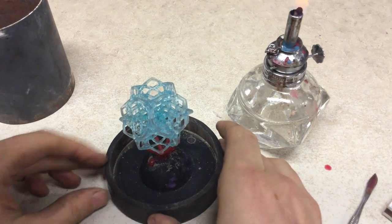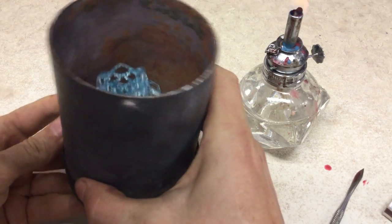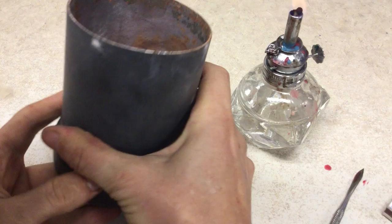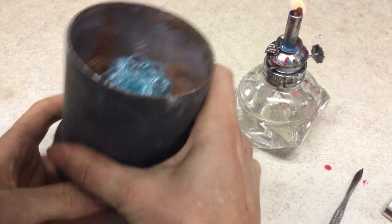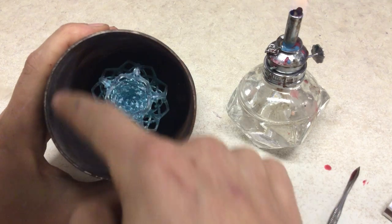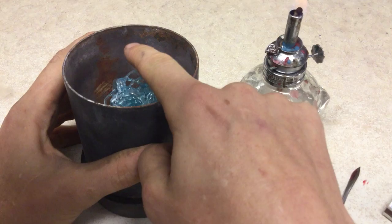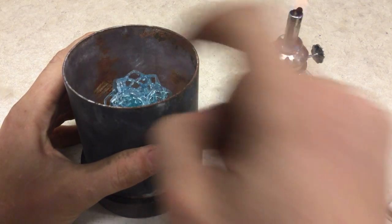...is to make sure that this flask fits around our part nice and uniformly, so that there's room around the perimeter and that the top is at minimum a quarter to a half inch away from your part.